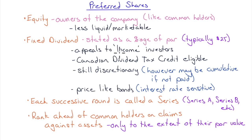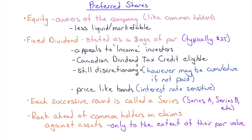The income from preferred shares is a dividend, not interest, so it's eligible for the Canadian dividend tax credit. If you receive $1 in interest income, you pay tax at your marginal rate. But $1 in Canadian dividends receives a tax credit, so the effective tax rate is much lower. For income investors wanting low portfolio volatility, preferred shares are worth considering as a proxy for debt instruments.